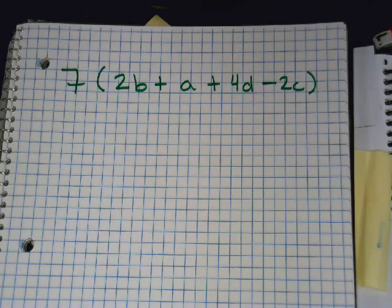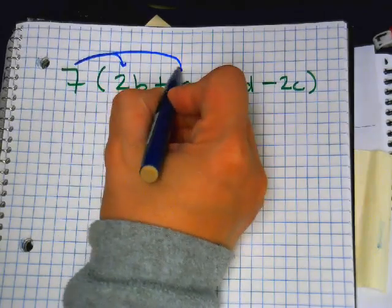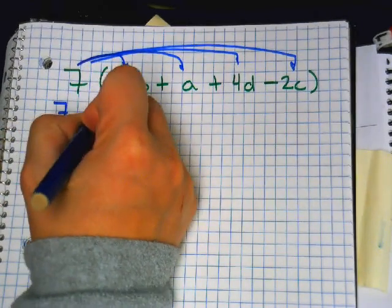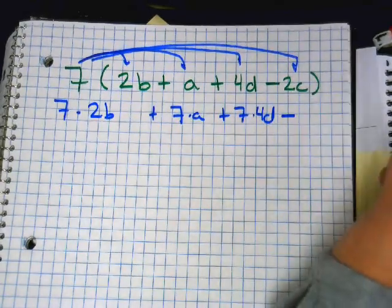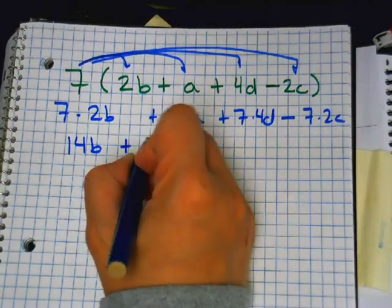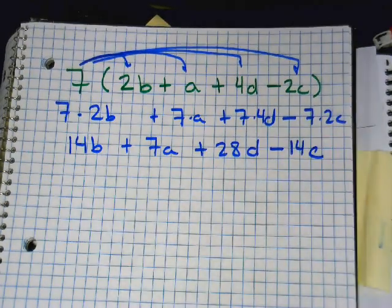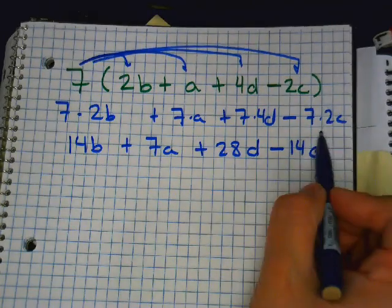So you give everyone a 7. Seven times 2B plus 7 times A plus 7 times 4D minus 7 times 2C. So 14B plus 7A plus 28D minus 14C. Can we put any of these together? No, because they're all different letters, so we cannot put anything that has a different letter together. So this would be your answer.